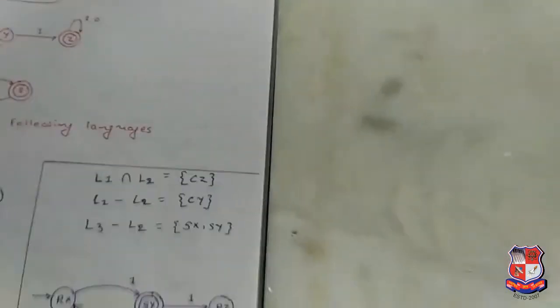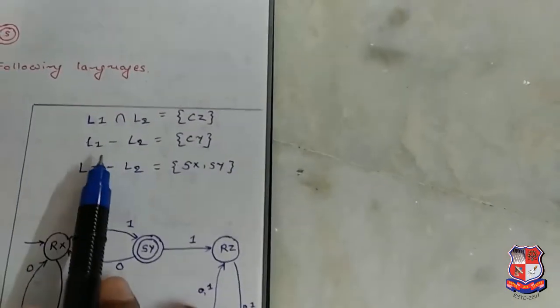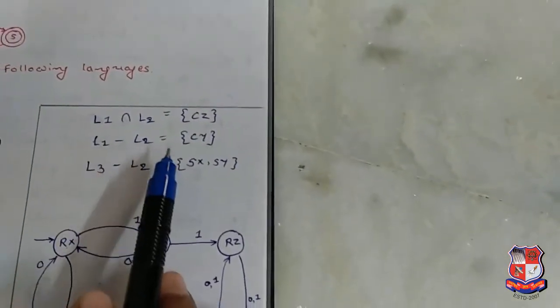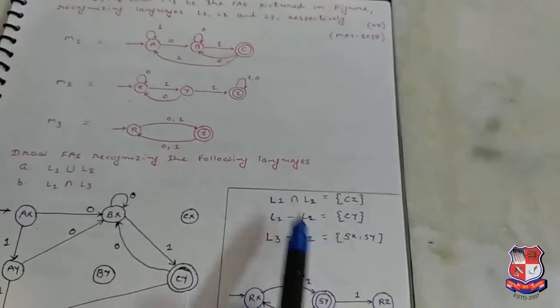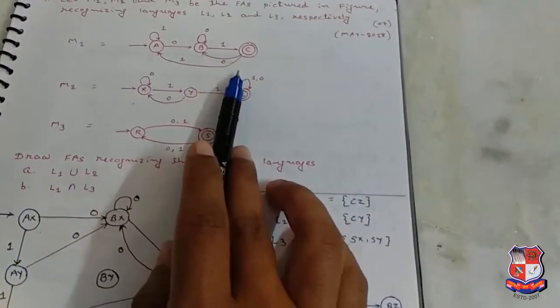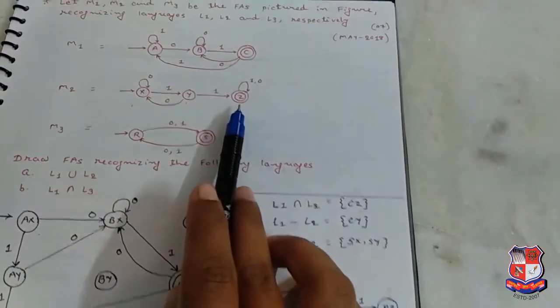The complement: for L1 minus L2, here L1 minus L2 we already drew. Then what are the final states? In L1 final state is C and in L2 final state is Z.